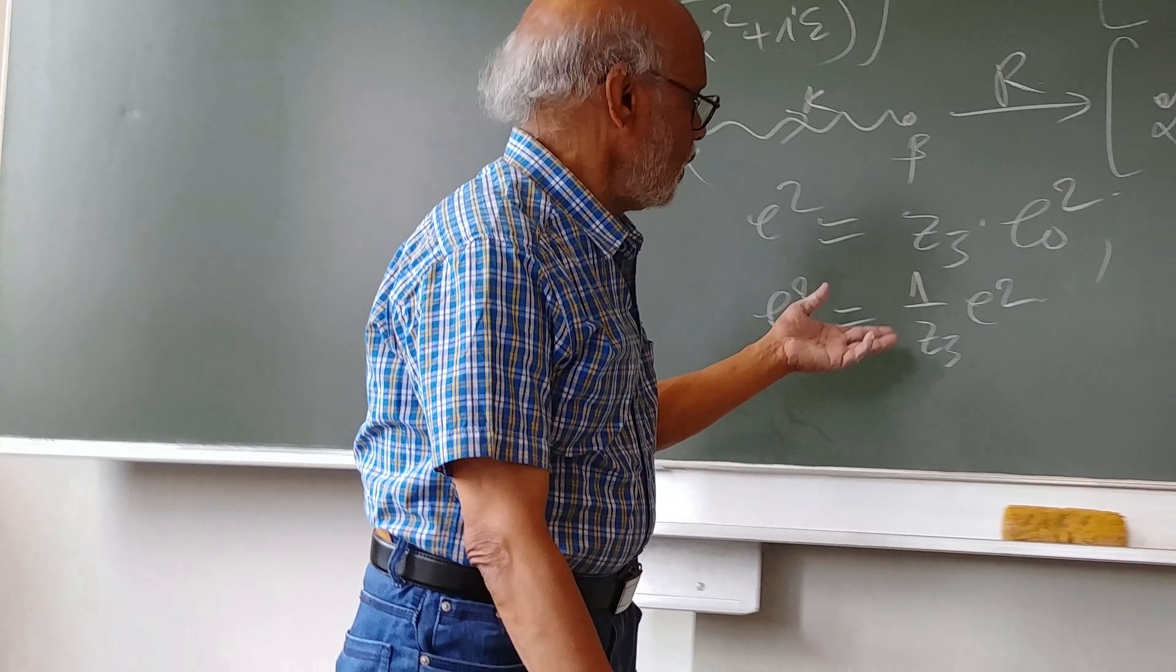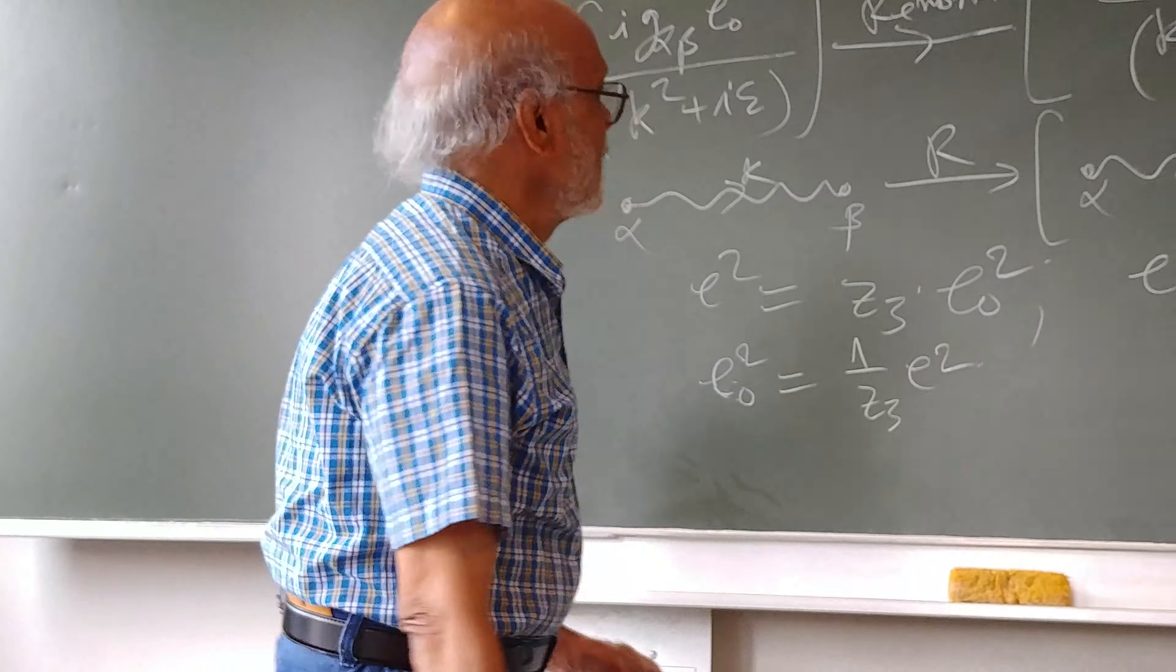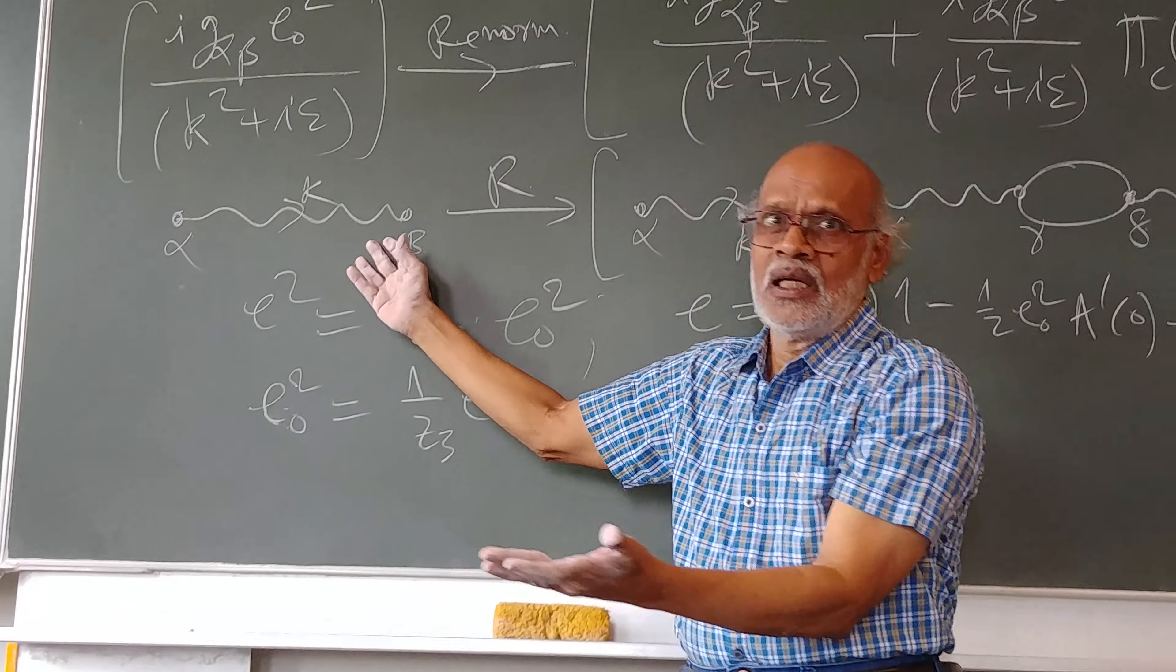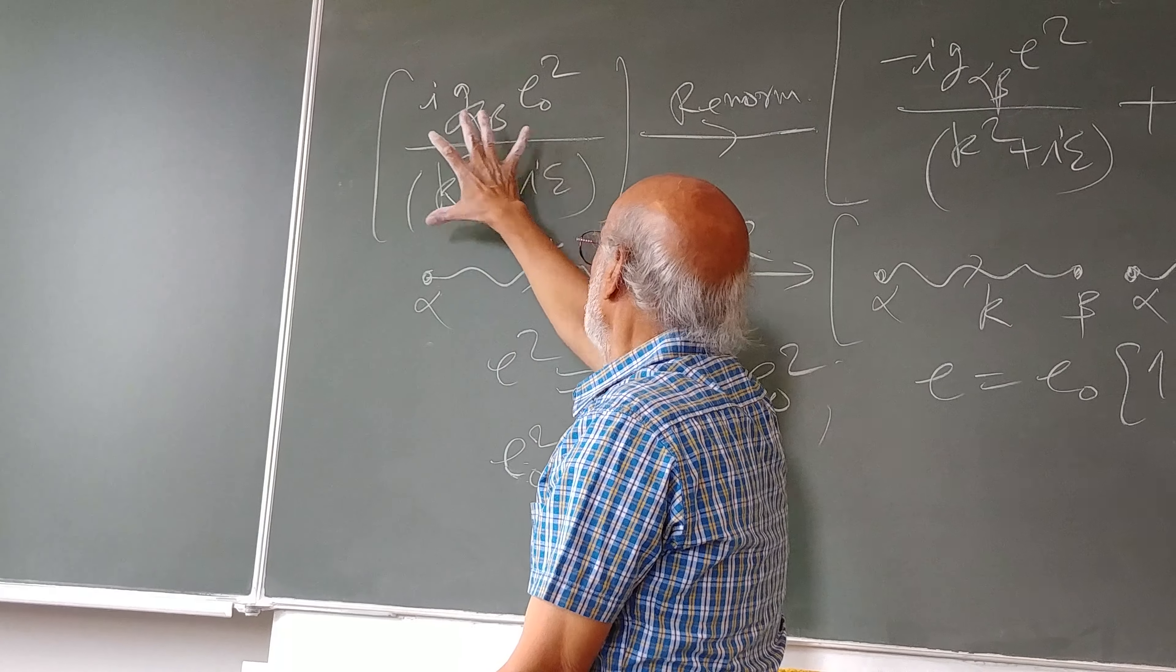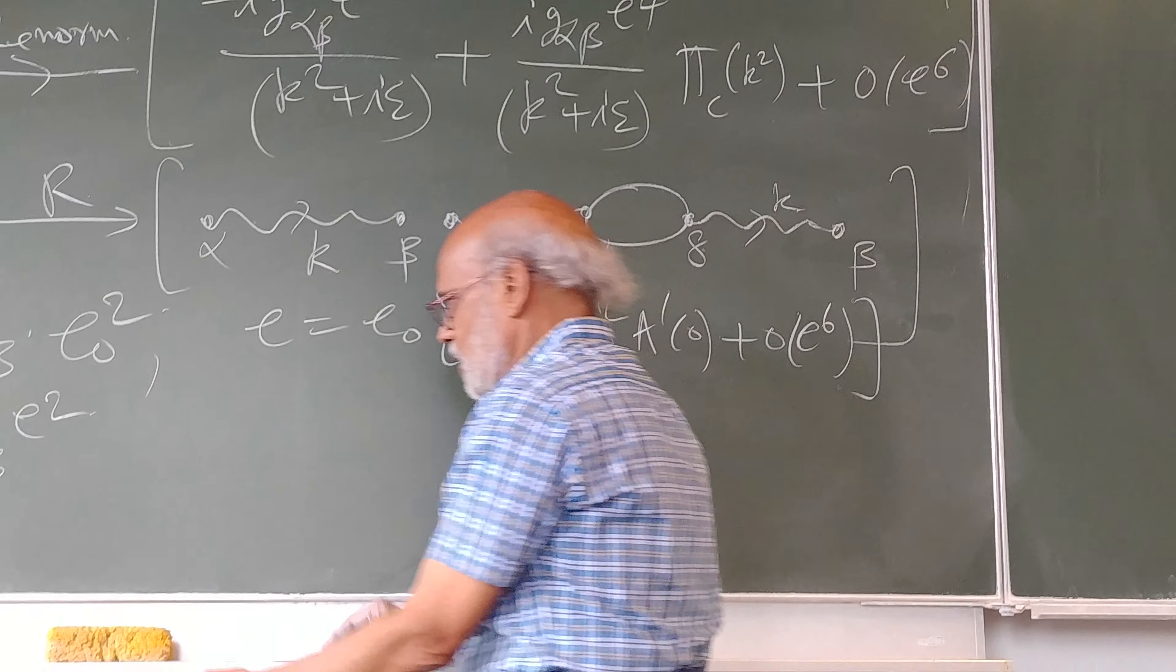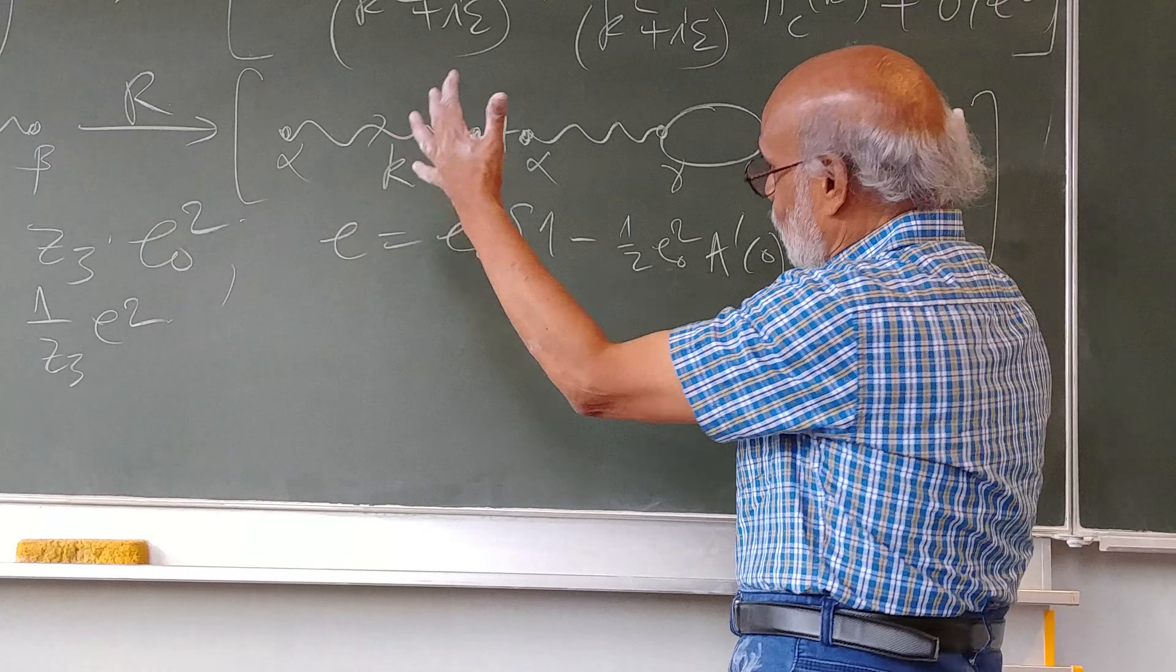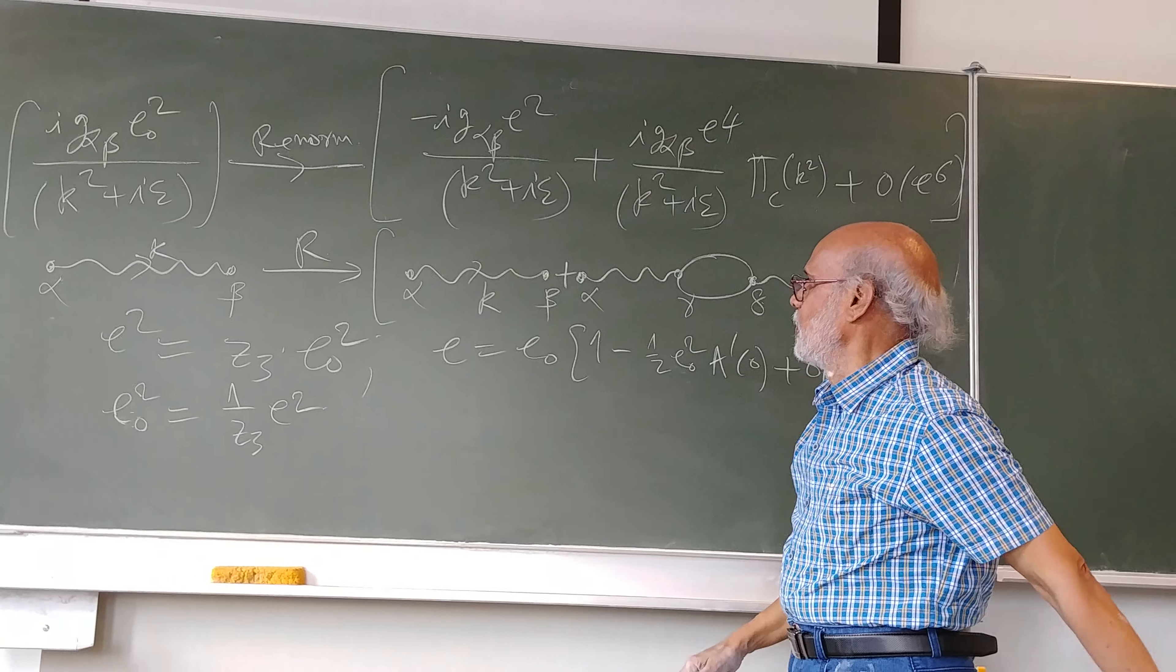So this is the non-renormalized propagator of the photon. Usually those who are experts in this game don't even write all these details, they just write this goes into this plus this. My plus is missing, I am sorry. Without this plus it would not be meaningful. So this plus this together is the renormalized thing.